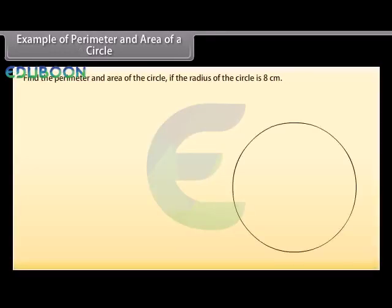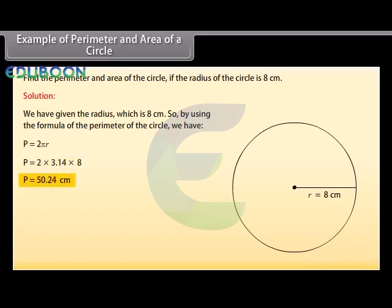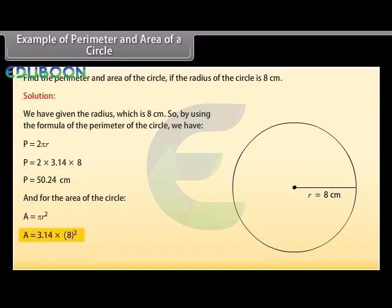Example 2: Find the perimeter and area of the circle if the radius is 8 centimeters. Solution: We have radius r = 8 cm. Using the perimeter formula, p = 2πr = 2 × 3.14 × 8 = 50.24 centimeters. For the area, a = πr² = 3.14 × 8² = 200.96 centimeters squared.